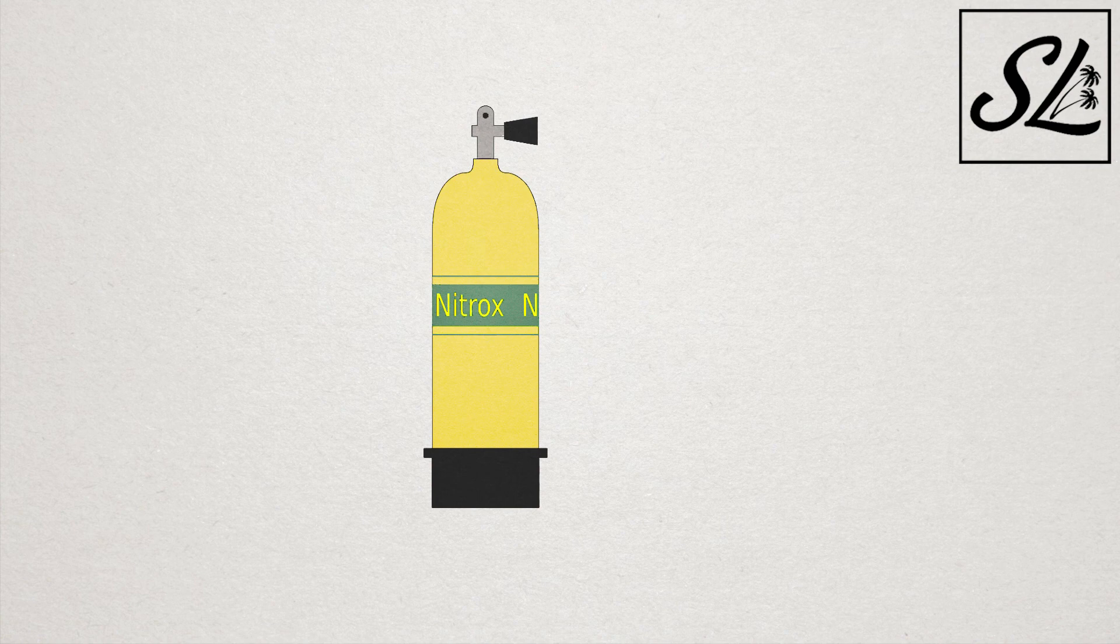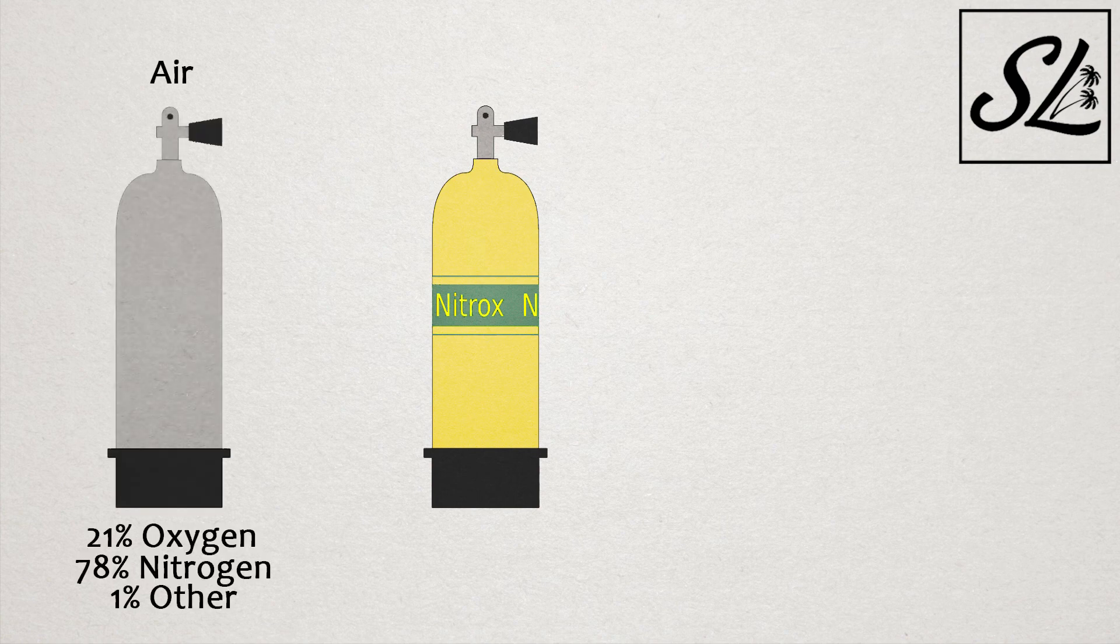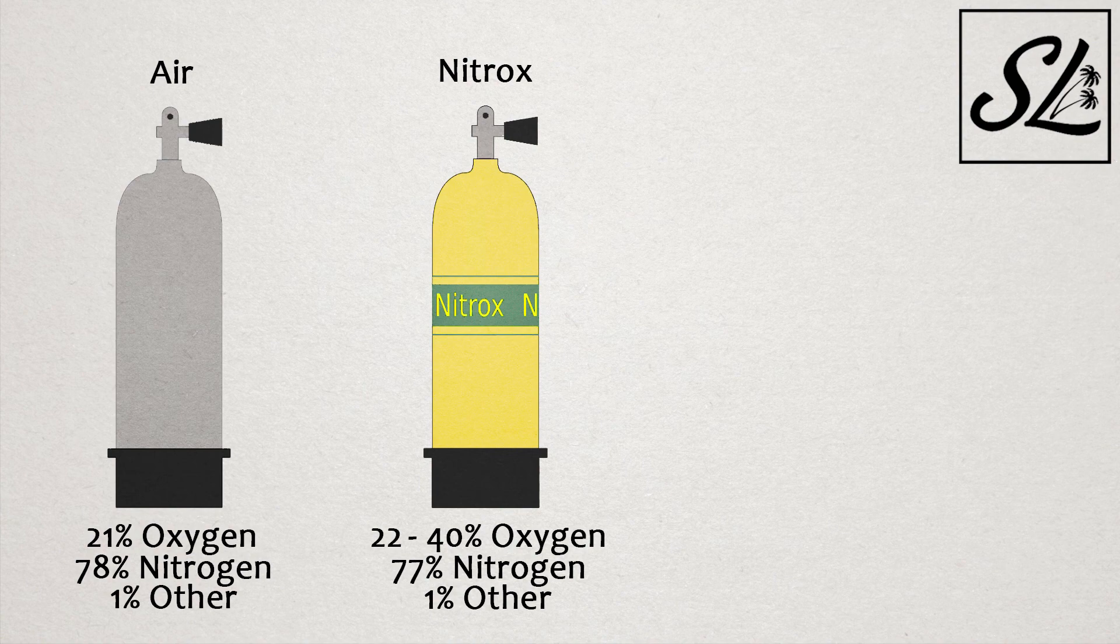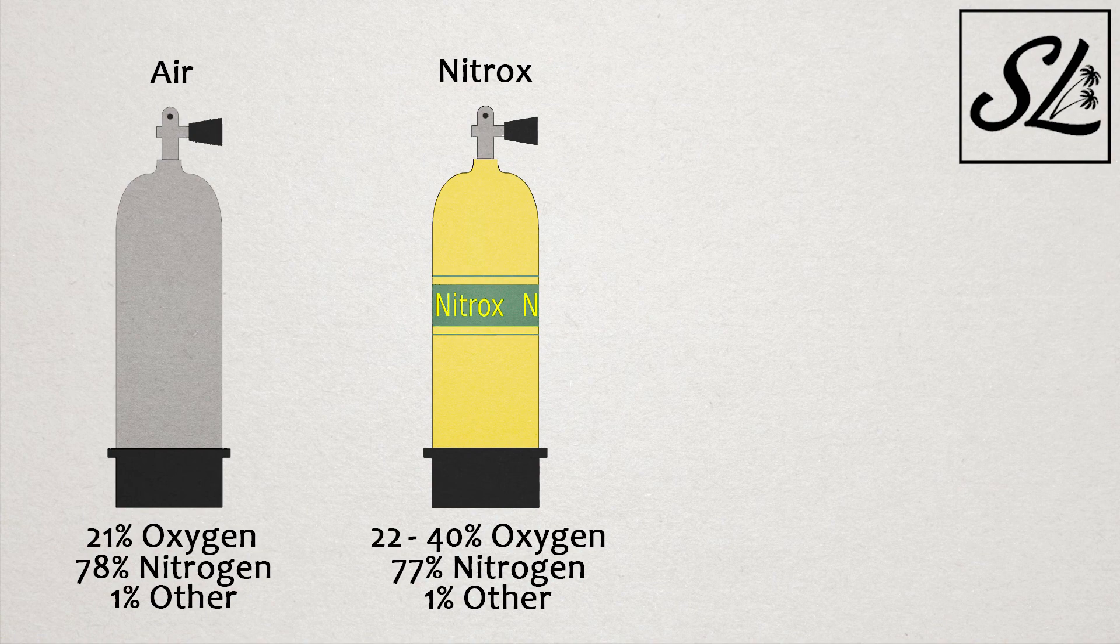Normal breathing air, the air that we would find in a standard scuba tank, will contain 21% oxygen, 78% nitrogen, and 1% other inert gases. A nitrox cylinder will contain anywhere from 22% oxygen to 40% oxygen for recreational divers. The rest of the mixture will be made up of nitrogen and other inert gases, same as air.